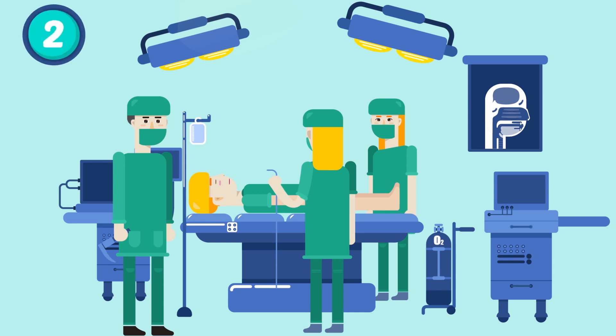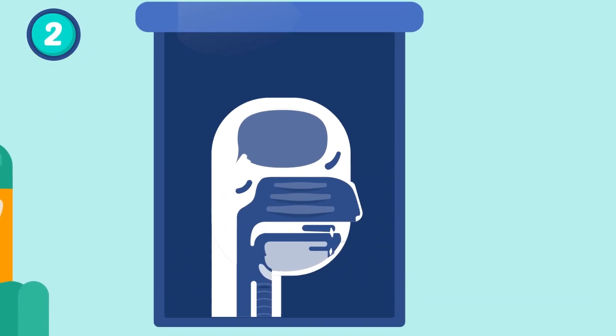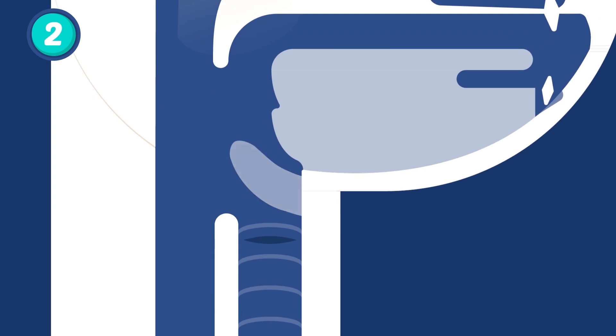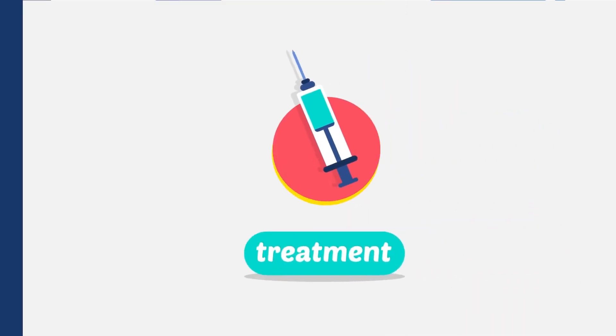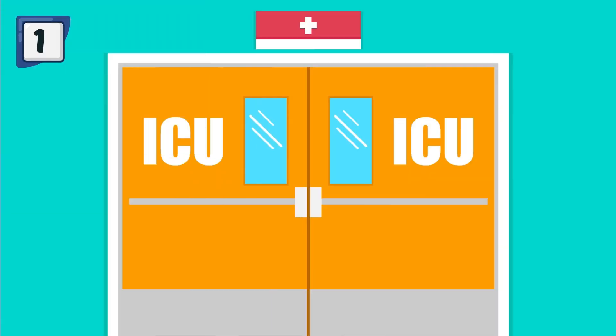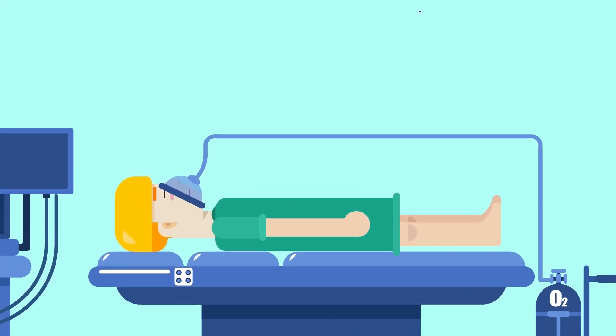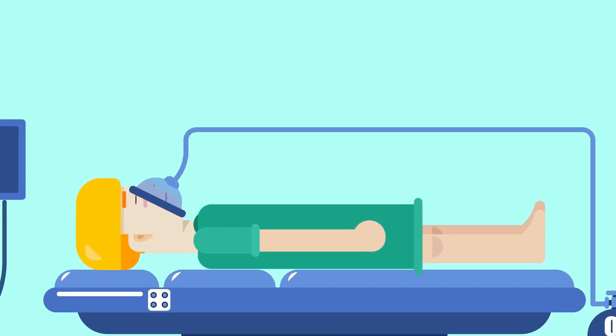5. Lateral soft tissue X-ray of the neck may show a swollen epiglottis. 6. Thumb sign. Treatment: 1. Hospitalization is essential because of the danger of respiratory obstruction.